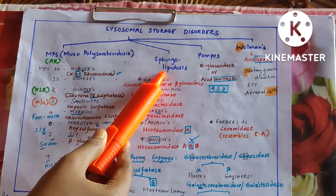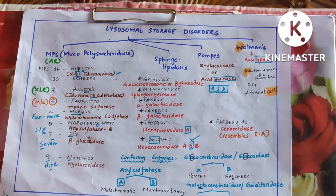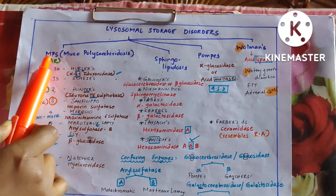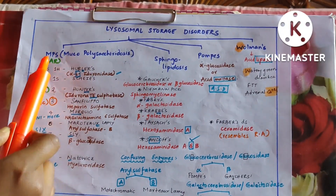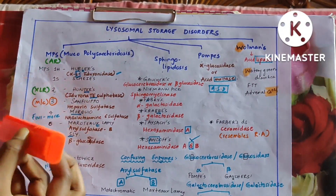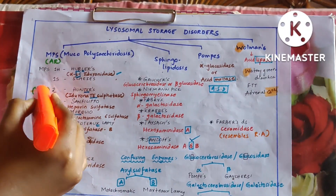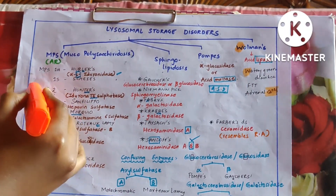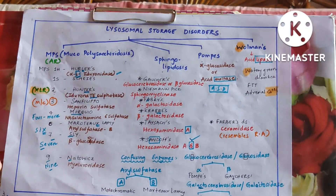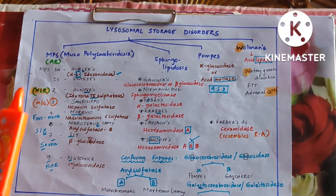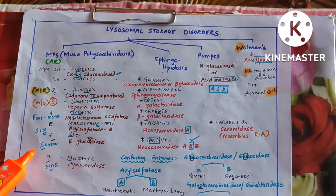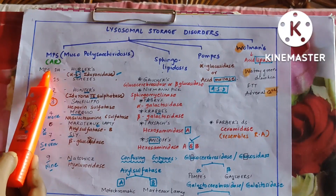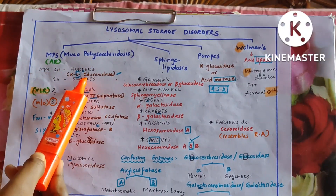Now we need to learn MPS and sphingolipidosis in detail. All MPS are autosomal recessive except Hunter's disease, which is X-linked recessive. Similarly, in sphingolipidosis, all are autosomal recessive except Fabry's, which is X-linked recessive. So here it is Hunter's, and in the next column it is Fabry's.